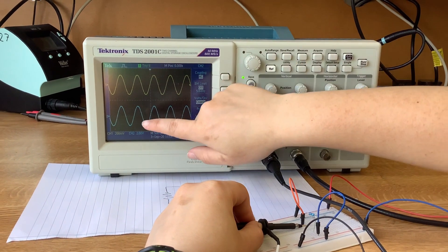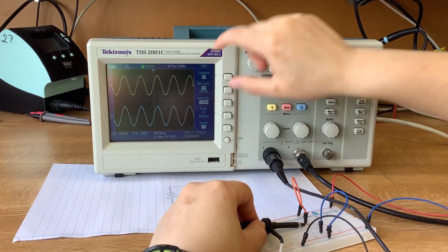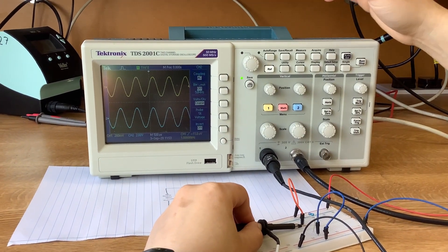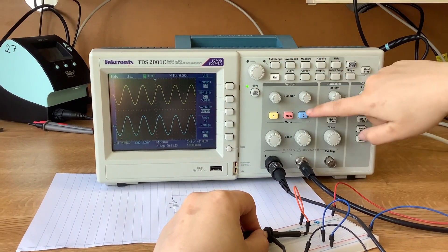As you can see here, we're getting 200 millivolts in channel 1, but it's not what we're expecting. We should get the same one as in channel 2.